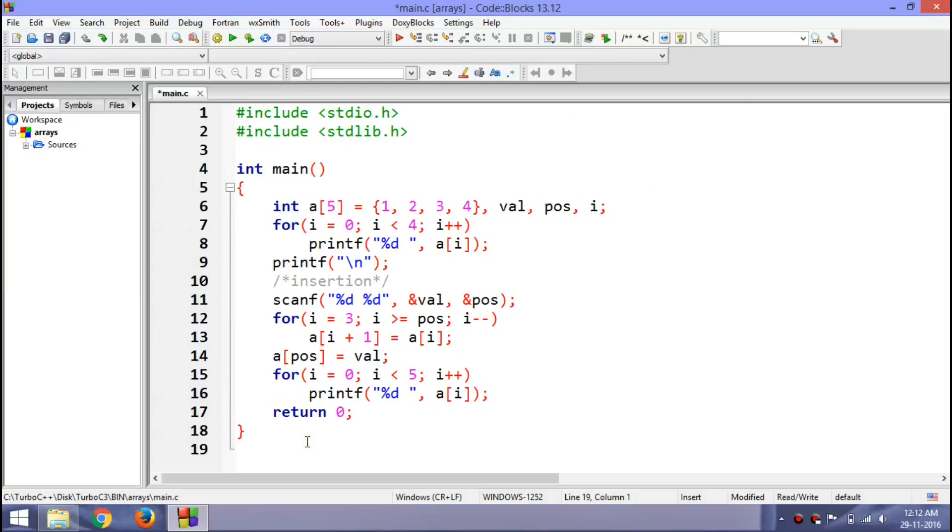So this is the last program that we made—the program for inserting an element in the array. Now we are going to convert it to deletion. So first thing, convert this comment to deletion. Then one thing that I remember: in the last code, I did not specify the size of the array or the position of the last element in the array.